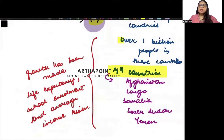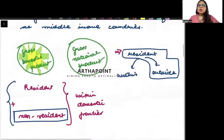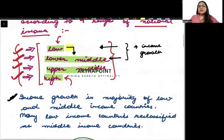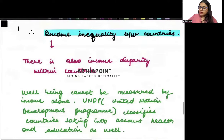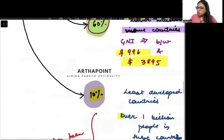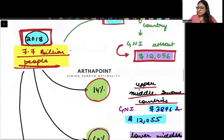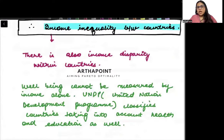It has been seen that over time, even these lowest income countries have seen better life expectancy, more school enrollment, and an increase in average income. With time, the lowest income countries can move up to become lower middle income countries. However, the most important thing to highlight is that there is high income inequality between countries, and within a country as well, income inequality can also be very high.